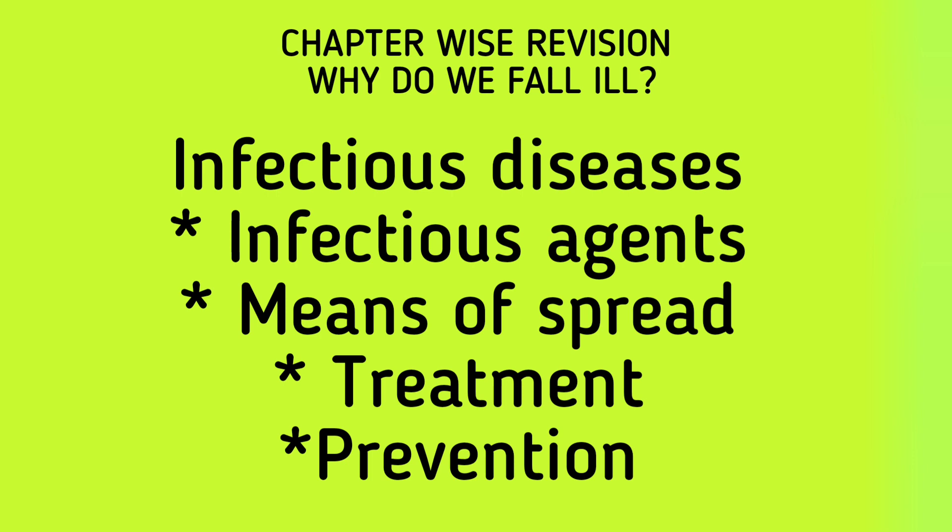How can we prevent infectious diseases? There are two ways — the general way of preventing exposure, and the specific way of preventing diseases through immunization and vaccination. The first vaccine for smallpox was discovered by Edward Jenner. These are the main points related to this chapter.